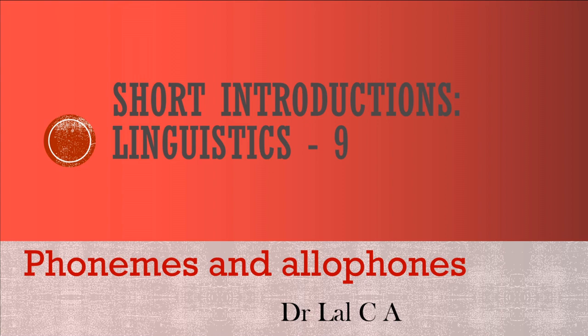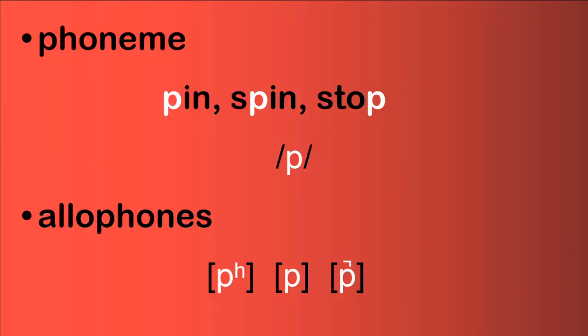In short introductions to linguistics, we look at phonemes and allophones. We know the phonetic alphabet, we have learned the consonants and vowels of English, and we have looked at all the phonetic symbols to represent these 44 sounds. Today we look at some slightly different forms of these sounds. These 44 sounds are the 44 phonemes of English, and each phoneme could have allophones.